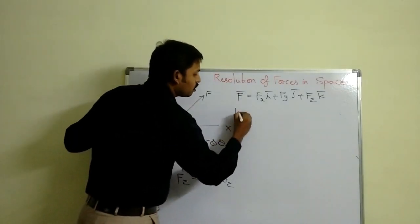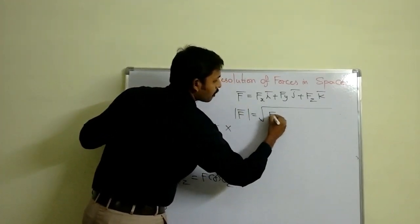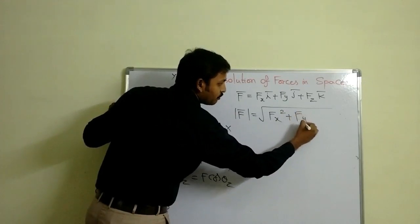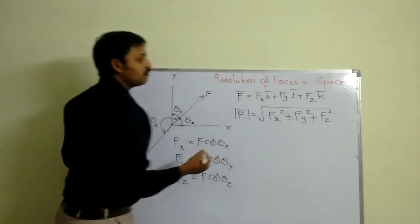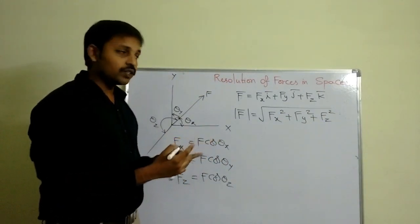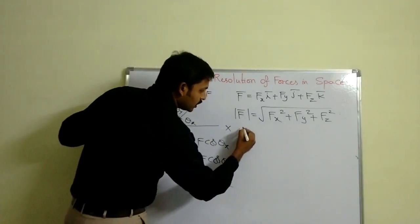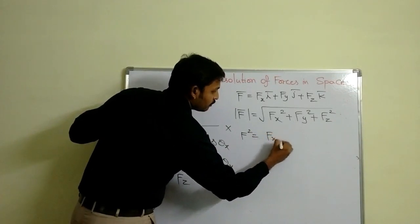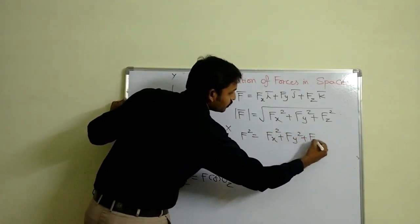If I want to find the magnitude, the modulus of F equals the square root of Fx squared plus Fy squared plus Fz squared. To derive a relation between the direction angles, I square both sides of this equation, giving: F squared = Fx squared + Fy squared + Fz squared.